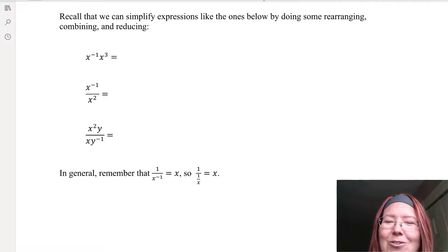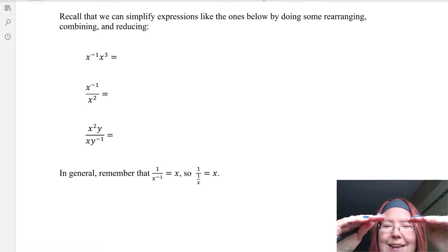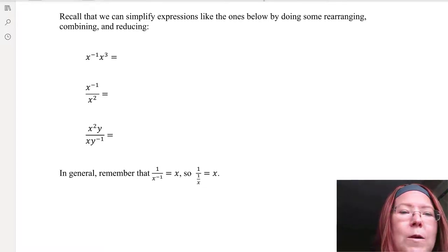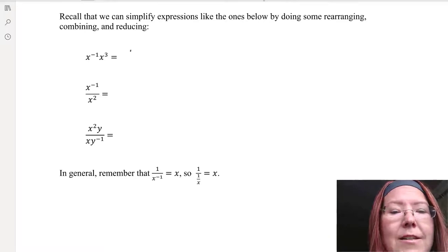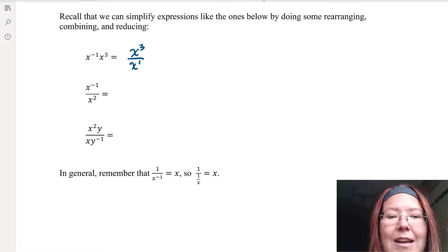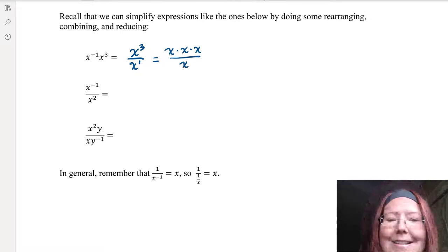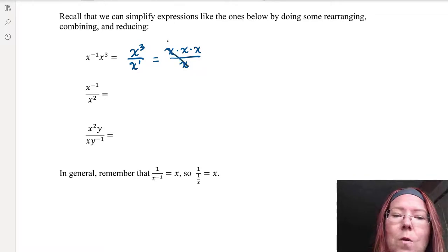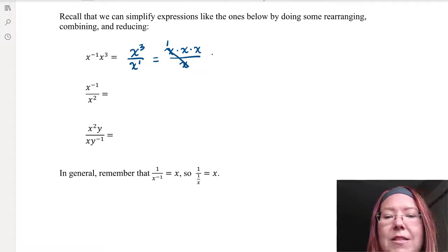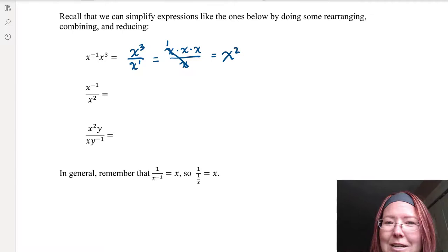Let's start with x to the negative first times x to the third. I can rearrange this by moving the x in x to the negative first to the denominator. When I do that, I will have x to the third over x to the first. That's x times x times x in the numerator with just one x in the denominator. We can reduce a pair of those x's to make one, leaving us with just x squared and no denominator.